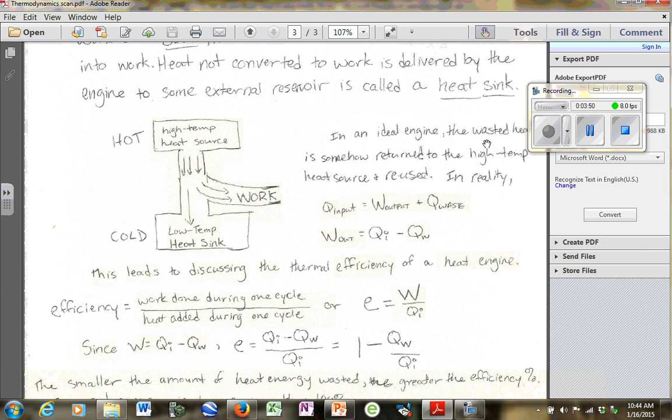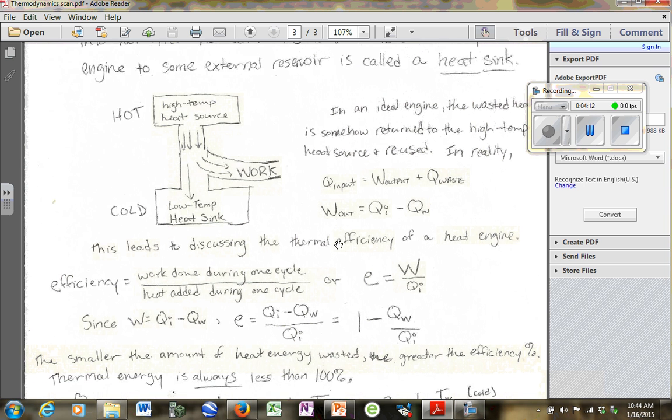So, obviously, it didn't have an ideal engine there. The wasted heat was not returned, and the hot and cold were the same. There was no work being done. These have to be different. QI is like the input heat. This is the hot, and W means the wasted. This is the cold, and if they're the same, if it's like 5 minus 5, that equals 0. You get no work.